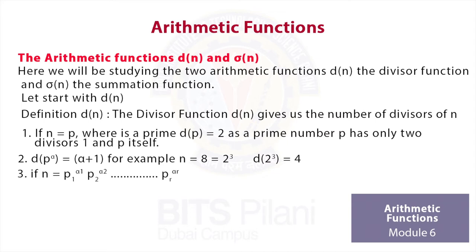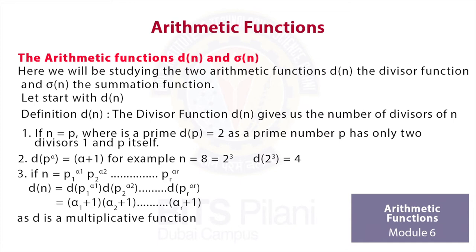What if n is a composite number? Let's say n is p1^α1 · p2^α2 · ... · pr^αr. In that case, d(n) will be d(p1^α1) · d(p2^α2) · ... · d(pr^αr). Applying the second formula to each term, we get (α1 + 1)(α2 + 1)...(αr + 1), since d is a multiplicative function.